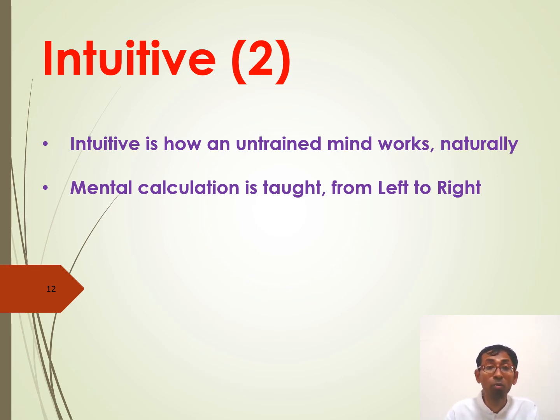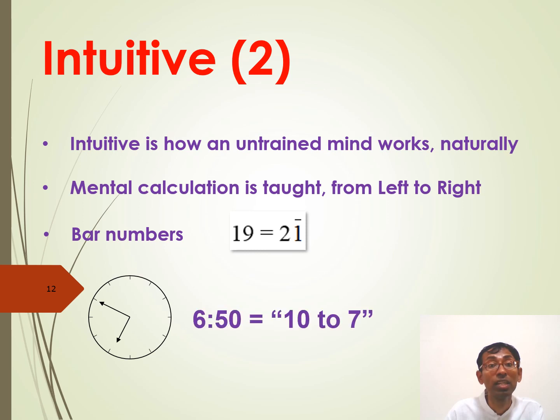And there is one more intuitive thing in Vedic mathematics called bar numbers. For example, here is a bar number. Nineteen. The big digits like nine, eight, seven, six, they can be replaced with small digits. For example, nineteen is close to twenty. It's twenty minus one. We write it as a two bar one. It is almost like you see there is a clock. The time is right now is six fifty. But you can, there is another easy way to say the time is ten to seven. These bar numbers are similar to this.